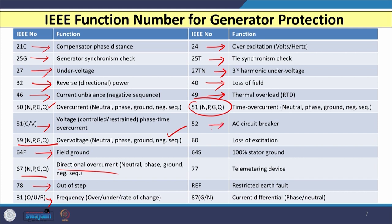Function 40 is for loss of field — if excitation is lost, this number is important. 49 is for thermal modeling of the generator for protection against overload. 51 is time over-current, a delayed operation compared to the instantaneous 50, and can be in neutral, phase, ground, or negative sequence form. 52 is for AC circuit breaker. 60 is for loss of excitation. 64 is for 100 percent stator ground fault. 77 is for telemetering devices. REF is for restricted earth fault protection. 87 is for differential protection — 87G and 87N both.